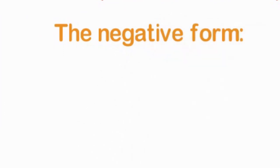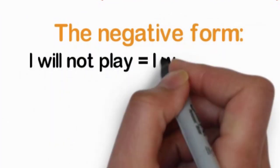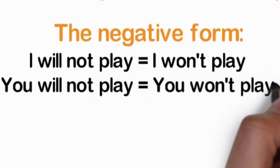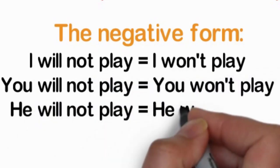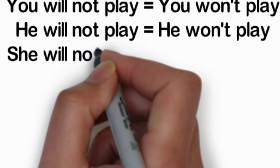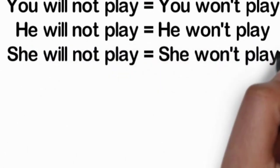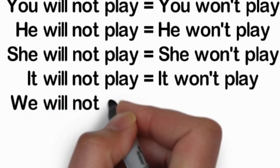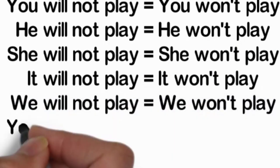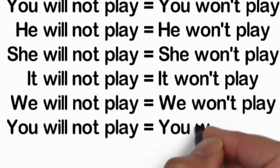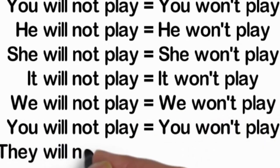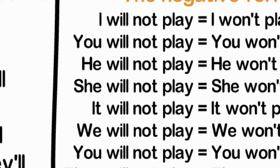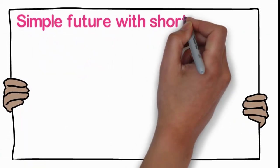The negative form: I will not play or I won't play, you will not play or you won't play, he will not play or he won't play, it will not play or it won't play, we will not play or we won't play, you will not play or you won't play, they will not play or they won't play.